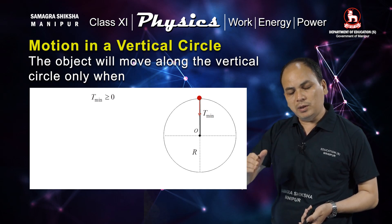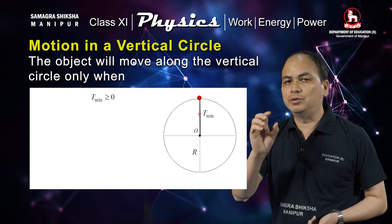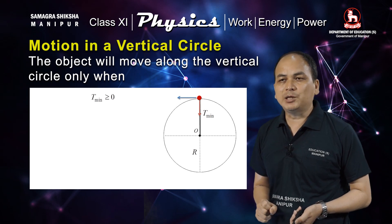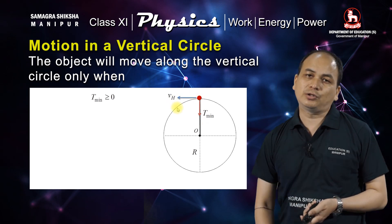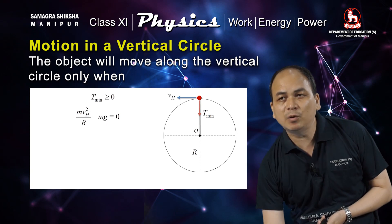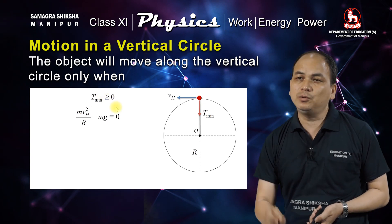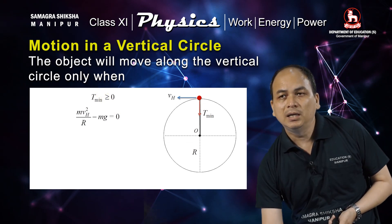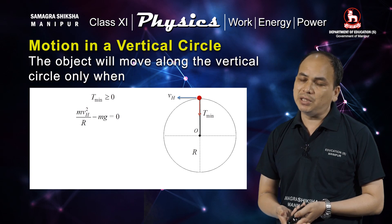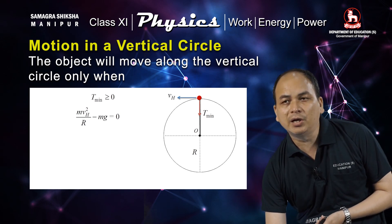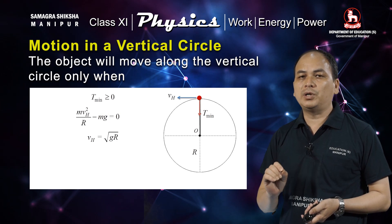The minimum tension has to be greater than or equal to zero. This gives us the condition for the minimum velocity at the highest point. Putting minimum tension equal to zero: mVh²/r minus mg = 0. Cancelling m, we find Vh = √(gr).